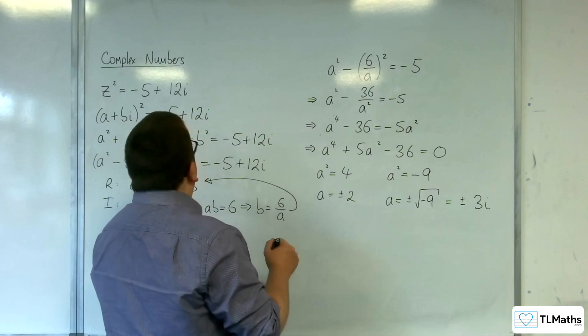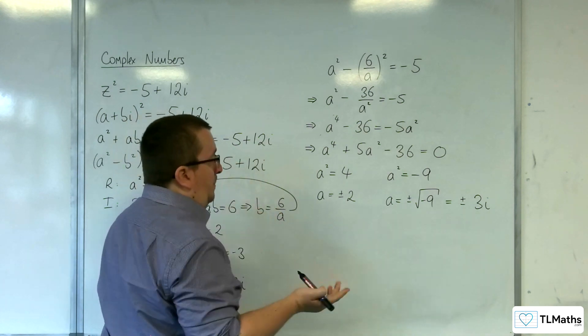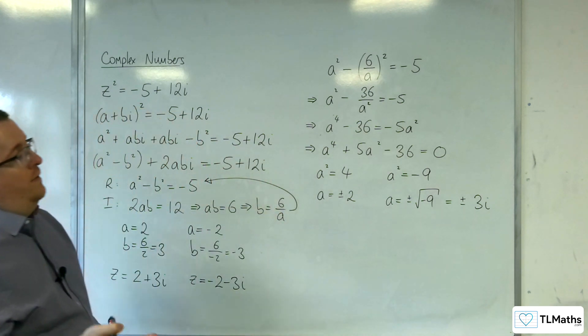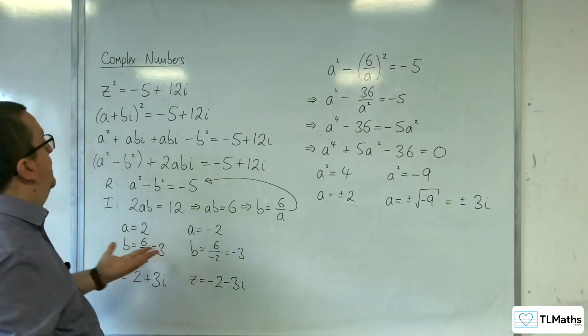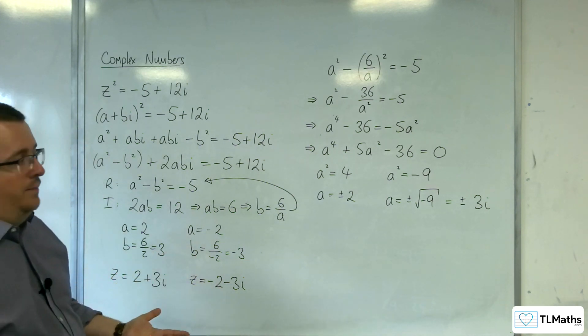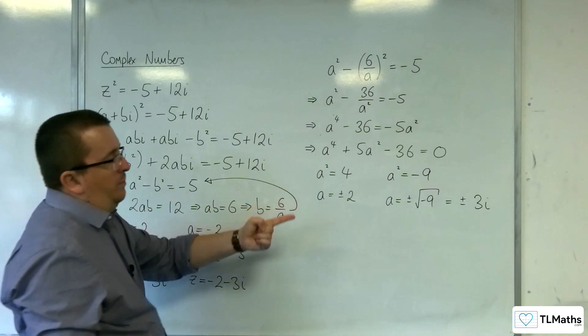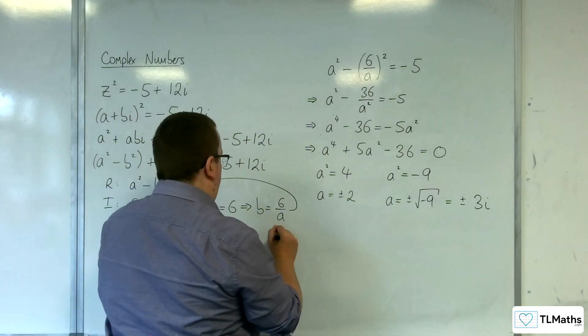Now, remember, I set it up as a+bi, where the idea was, although I didn't explicitly state it, was that a and b would be real. Now, a being ±3i, let's see what happens.